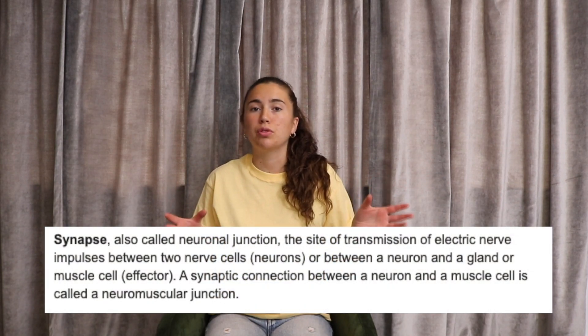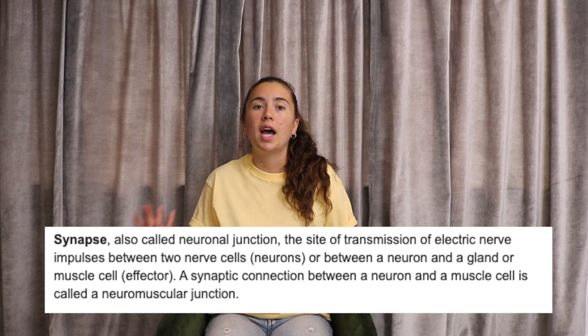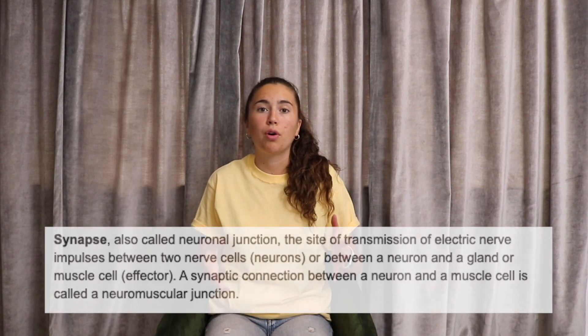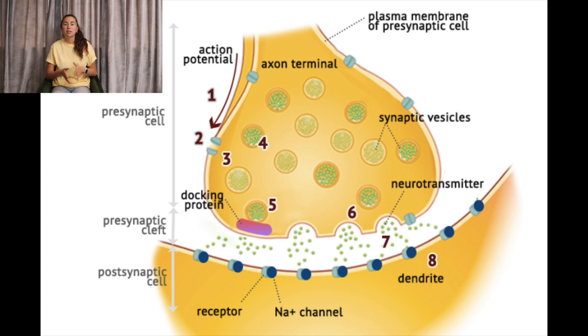Before we get started, let's do a quick review of what synapses are. A synapse is a junction between two neurons, or between a neuron and some other type of tissue. It is the point of communication between a neuron and a receiver cell. The way a synapse works is we have a postsynaptic cell receiving the messenger and a presynaptic cell, typically the neuron, delivering the signal. Neurotransmitters are released from the presynaptic cell and act on receptors on the postsynaptic cell to deliver a message.